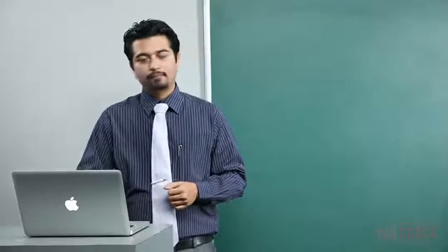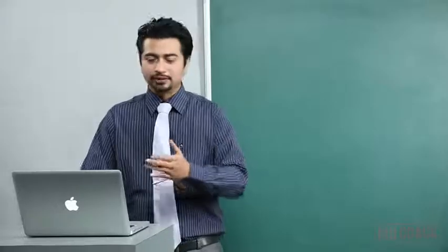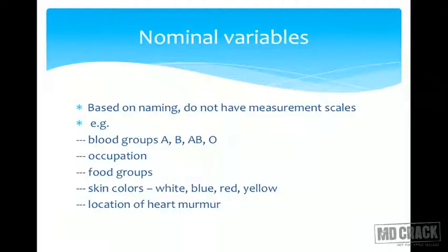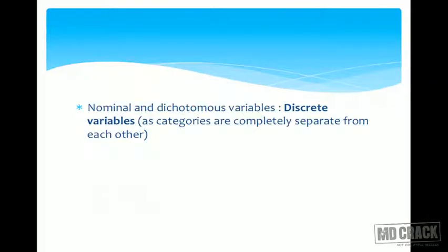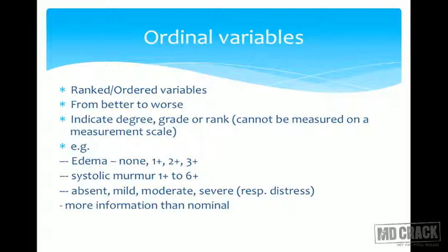Nominal data has names with no order — blood group ABO, occupation, food groups, skin color, location of heart murmur. Dichotomous variables have two options: well or sick, normal or abnormal, male or female, treatment or placebo. Nominal and dichotomous data are called discrete variables because these categories are completely separate and mutually exclusive.